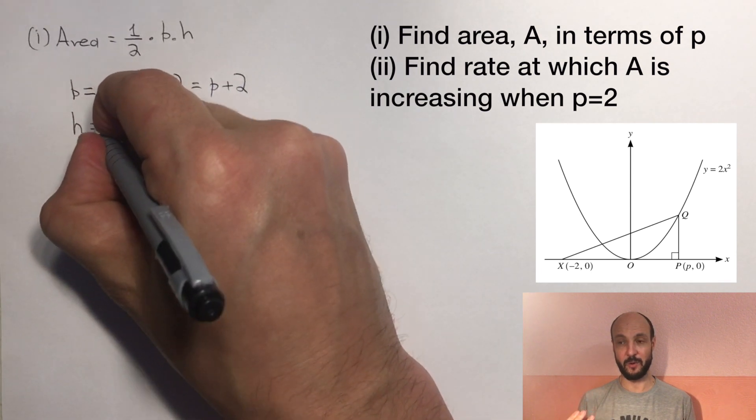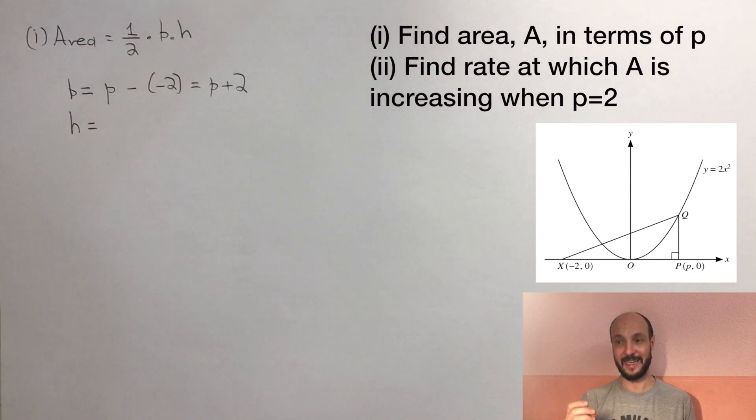Now, as for the height, we can see the top corner of the triangle intersects the curve y equals 2x squared. And we can see that the x coordinate there is p because that's a vertical line and the bottom of it is p comma 0.